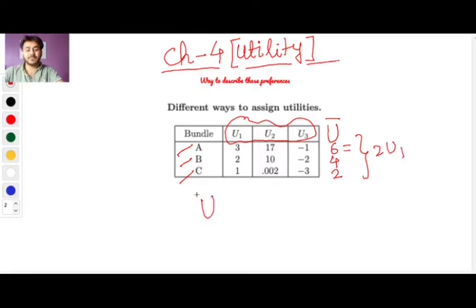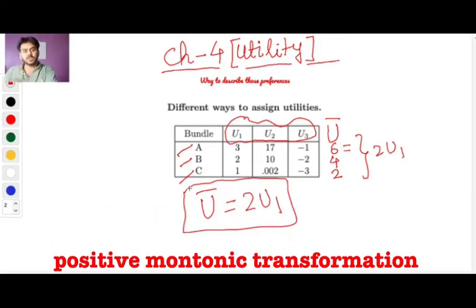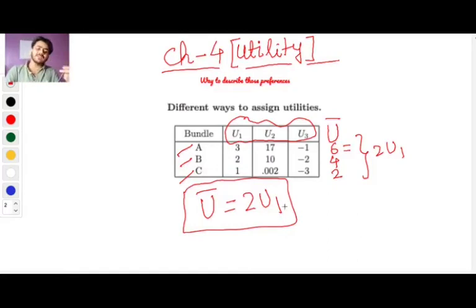When I define u bar as twice of u1, I am just doing a monotonic transformation on u1. Monotonic transformation, or strictly speaking positive monotonic transformation, means that I am increasing the utility function by a certain way such that the order is preserved. When I increase the underlying utility, the transformed utility also increases.